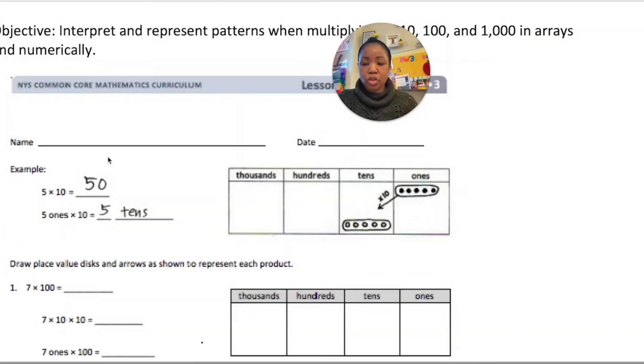Let's jump right into it. For this work we're going to draw place value disks and arrows to show and to represent each product. So we're multiplying here by 10 or by 100 or by 1000. We need to model it and also solve it. For this example we have 5 times 10, that's 5 ones times 10 and that equals 50 which is 5 tens.